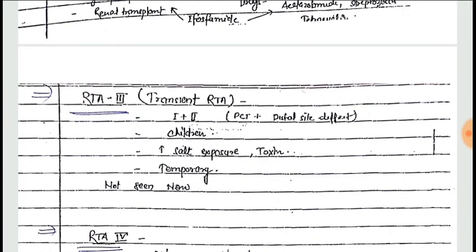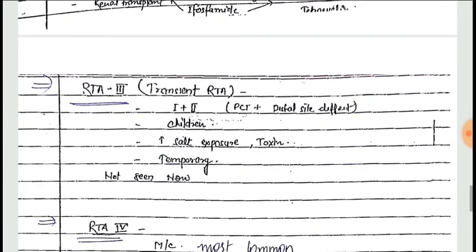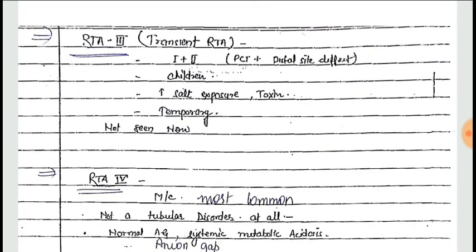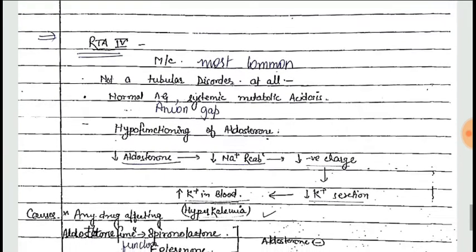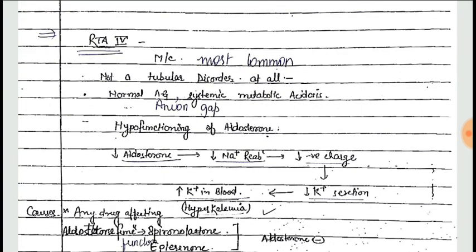Type 3 renal tubular acidosis is a transient type in which both Type 1 and Type 2 features are present. It is seen in children in cases of increased salt exposure or exposure to toxins. It is a temporary type and is not commonly seen nowadays.